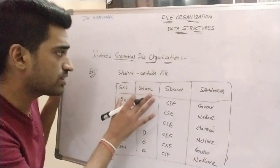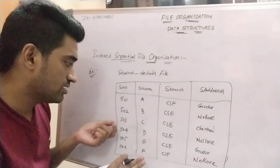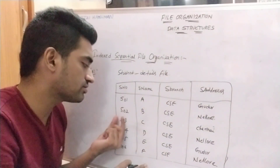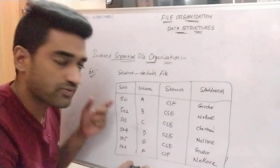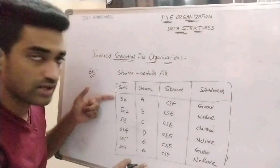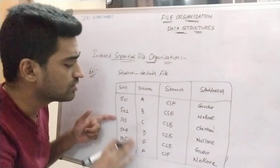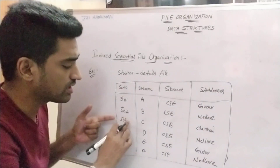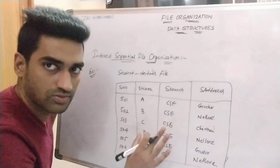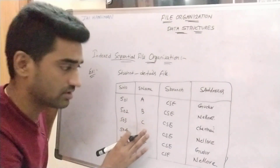So this is the sequential file. For suppose if I want to update student 503 details, how to update the 503 details in sequential file organization — we can search sequentially. So first of all, 501 record is not found, 502 record is not found, 503 record is found. Then we can make some changes in any attribute value. That is the general process in sequential file organization.